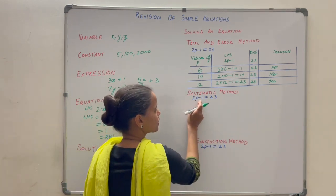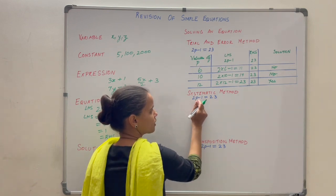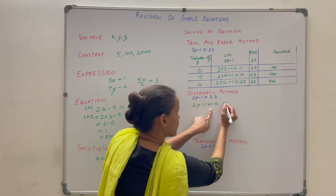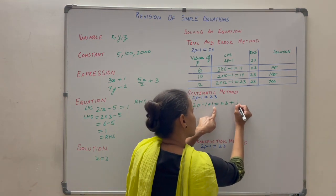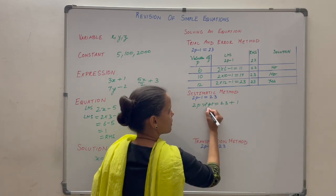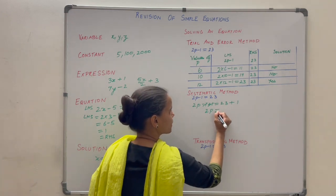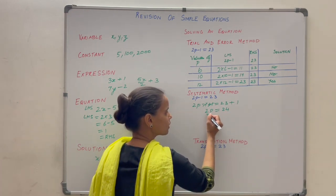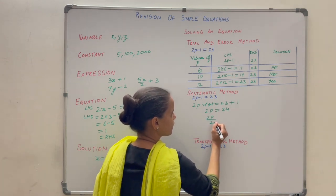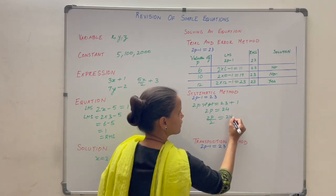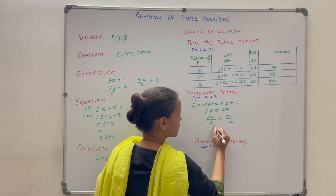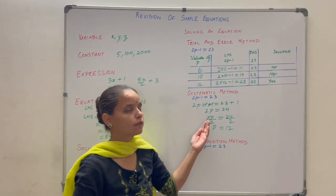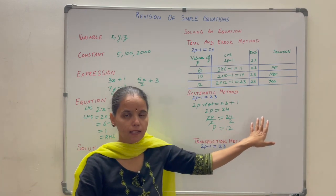Let us apply this to 2p minus 1 equals 23. Since it is minus 1, I add 1 to both sides — the minus and plus cancel. So left hand side becomes 2p and right hand side becomes 23 plus 1 equals 24. Now divide both sides by 2: 2p divided by 2 gives p, and 24 divided by 2 is 12. You get the same answer. Whatever operation you perform on one side, you must perform the same operation on the other side with the same number.